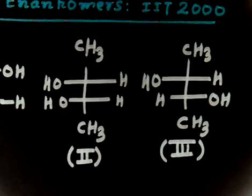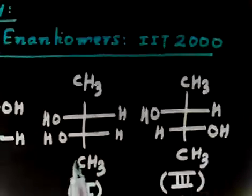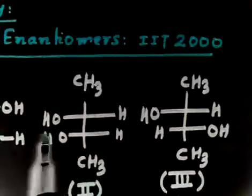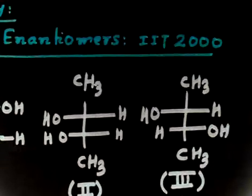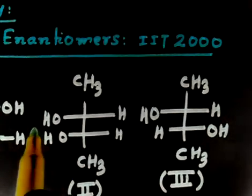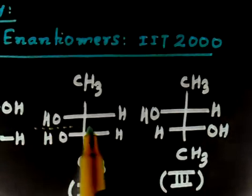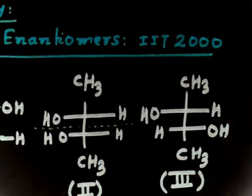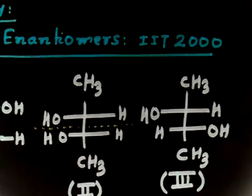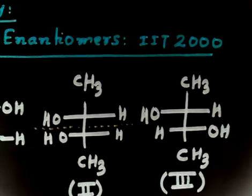In compound two, there is a plane of symmetry. If you divide this molecule along this plane, you will find a plane of symmetry. So this compound will show optical rotation of zero degrees, and that makes it a meso compound. So compound two is meso.